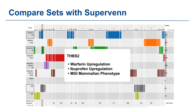From this visualization, we were able to identify a shared gene, THBS2, present in warfarin upregulated, ibuprofen upregulated, and MGI mammalian phenotypes. This result implies the THBS2 gene is linked to upregulation in response to the drugs warfarin and ibuprofen. Additionally, it is associated with bleeding phenotypic traits. This information is valuable for understanding the gene's potential roles in drug responses and physiological processes related to increased risk of bleeding.